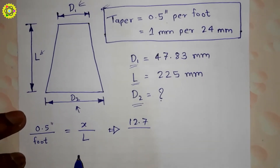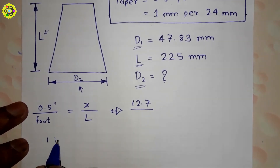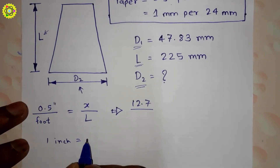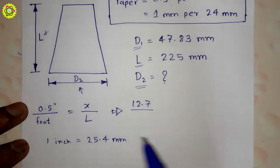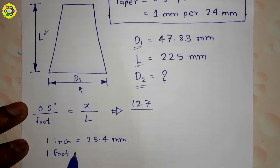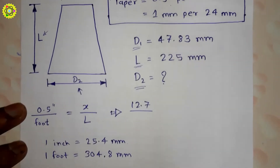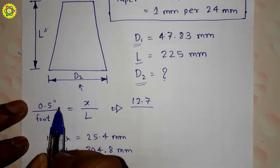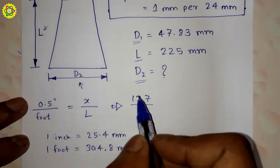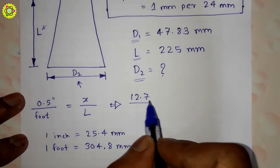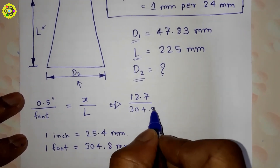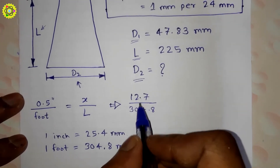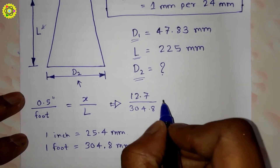First, the unit conversions: 1 inch = 25.4 mm, and 1 foot = 304.8 mm. We have 0.5 inches, which is half of 25.4 mm, so 0.5 inches = 12.7 mm. And 1 foot = 304.8 mm.